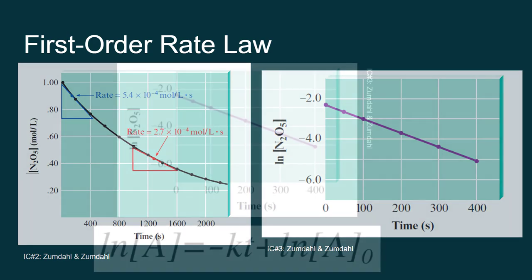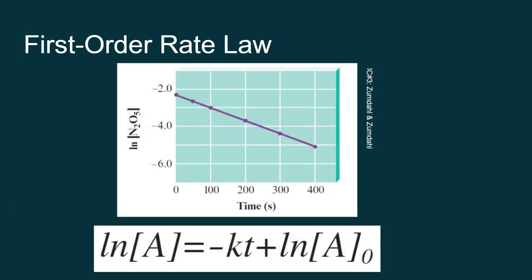If I graph the natural log of concentration versus time, I now get the equation of a line, which is much easier to work with. From the equation of a line, I know that the negative value of the slope is going to be my rate constant. The y-intercept will be the natural log of my initial concentration. And if I want to find the concentration at any time, I can plug in time into my equation and get the natural log of that concentration.